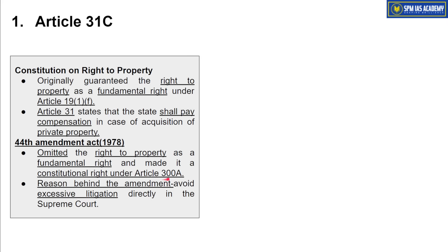Right to property was no longer kept as a fundamental right. It was moved to Article 300A. As a result of the 44th Amendment Act 1978, right to property is no longer a fundamental right — it is just a constitutional right protected under Article 300A. The reason behind this amendment was excessive litigation, as people were directly approaching the Supreme Court to protect this fundamental right.